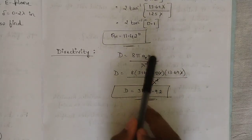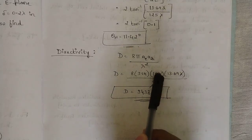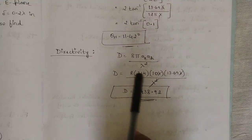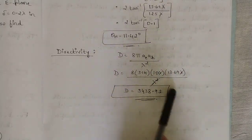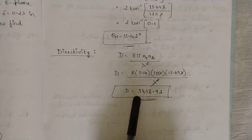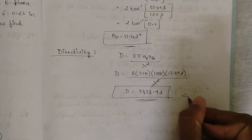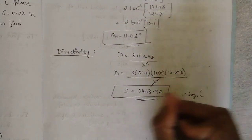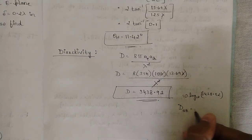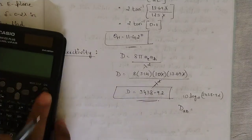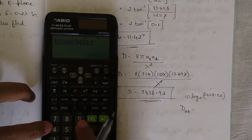The directivity of the horn antenna is given by D = (8π · a_e · a_h) / λ². Substituting: D = (8 × 3.14 × 10λ × 13.69λ) / λ². The λ² terms cancel, and multiplying the numerical values gives D = 3438.92. In decibels: D(dB) = 10·log₁₀(3438.92) = 35.3 dB.